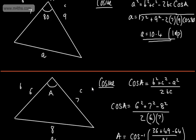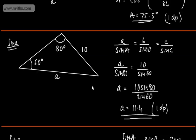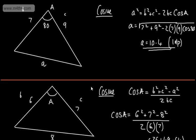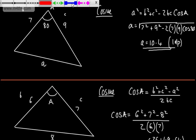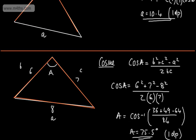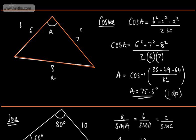These are basic examples of using the sine and cosine rules to find missing lengths and angles in non-right-angle triangles. Remember: use the cosine rule when you have two known sides and an enclosed angle, or three known sides. Otherwise, use the sine rule for non-enclosed angles. If you need a full tutorial, there is one linked here.